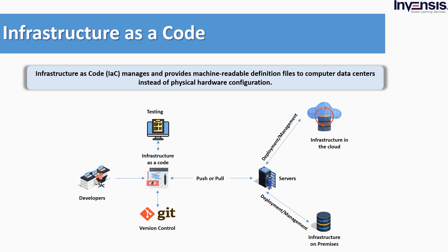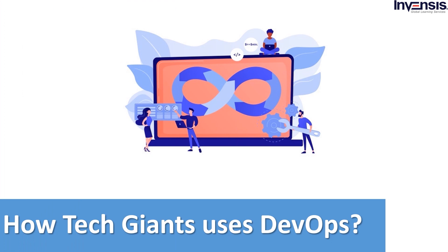IaC works based on two main approaches. The imperative approach describes a set of commands or instructions so that the infrastructure can achieve the final outcome. The declarative approach explicitly defines the sequence of steps the infrastructure needs in order to reach the final result, which helps you to see how your final result looks. Chef, Ansible, and Puppet are some of the famous tools used. Now let's see how tech giants use DevOps.